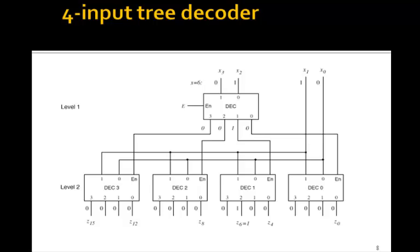This shows how to make a 4 input tree decoder. Here there are 5 2 to 4 decoders and it produces a 4 to 16 decoder.